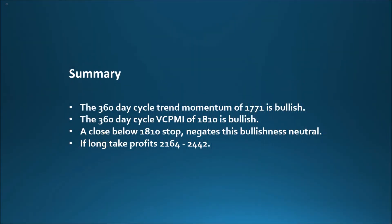Summary. The 360-day cycle trend momentum of 1771 is bullish. The 360-day cycle vcpmi of 1810 is bullish. A close below 1810 stop negates this bullishness to neutral. If long, take profits at 2164 to 2442.